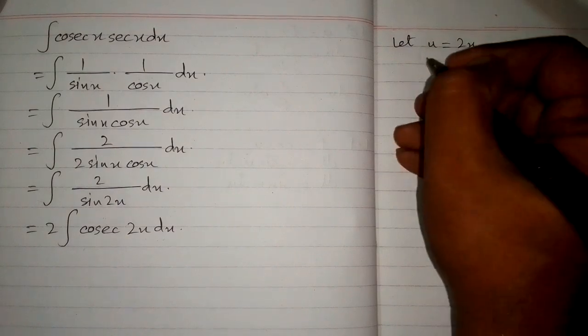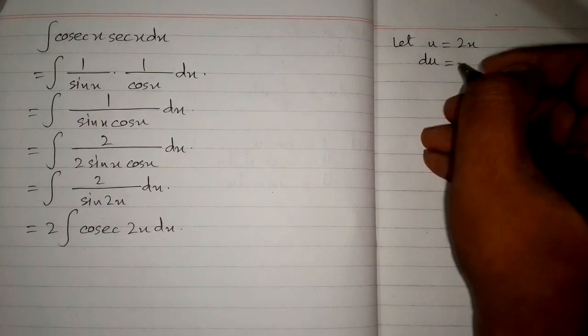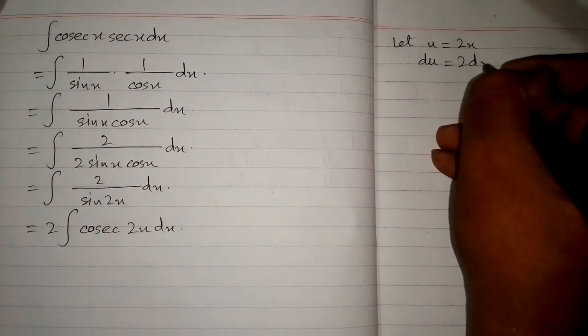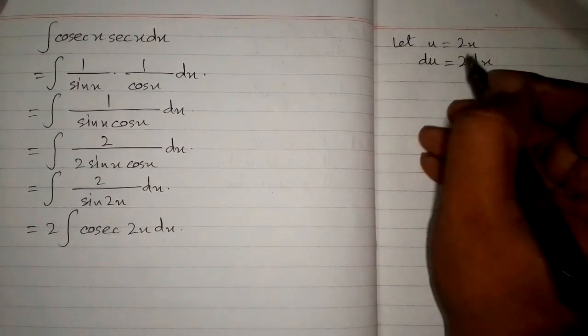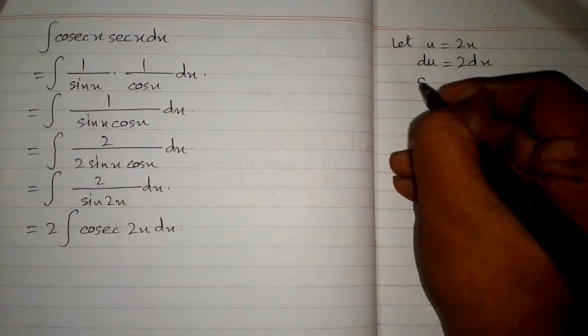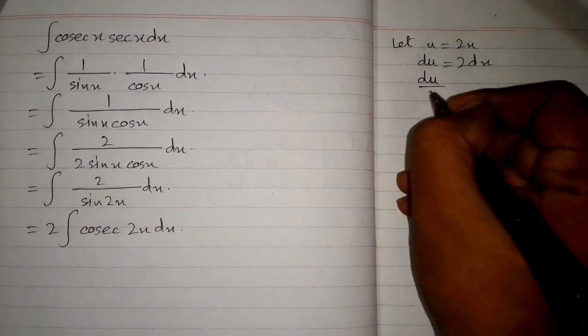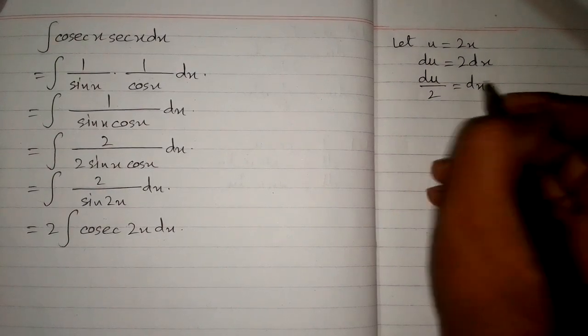So the differential du is equal to 2 times dx, because the derivative of 2x is 2, and du upon 2 is equal to dx.